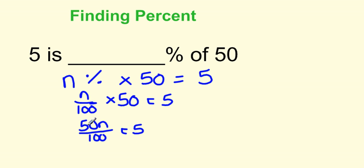We want to solve for n, so we want to get that by itself. To do that, we're going to multiply both sides by 100. So we're going to multiply this side by 100 and this side by 100. What we're going to end up with is these two 100's canceling out. So we'll have 50n equals 500.